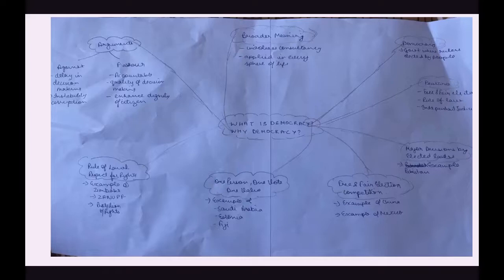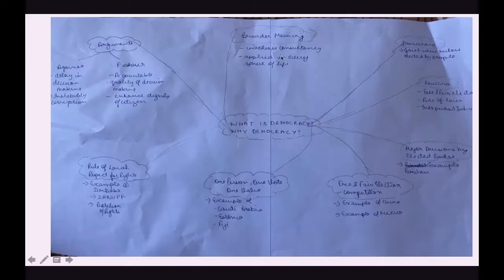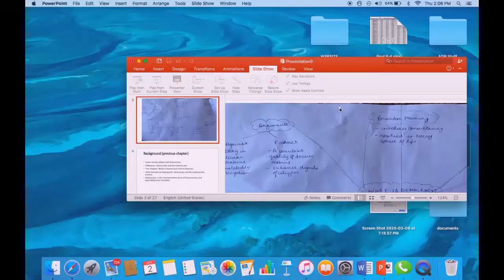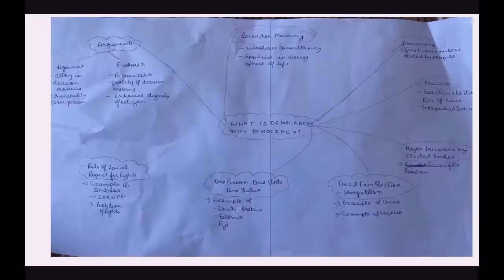The democracy chapter starts from the meaning of democracy, then talks about the main features — which tell about the reality of democracy. Then we'll study features in focus, arguments for and against democracy, and finally the broader meaning of democracy. In this video we'll also learn about different chapter questions and activity questions.